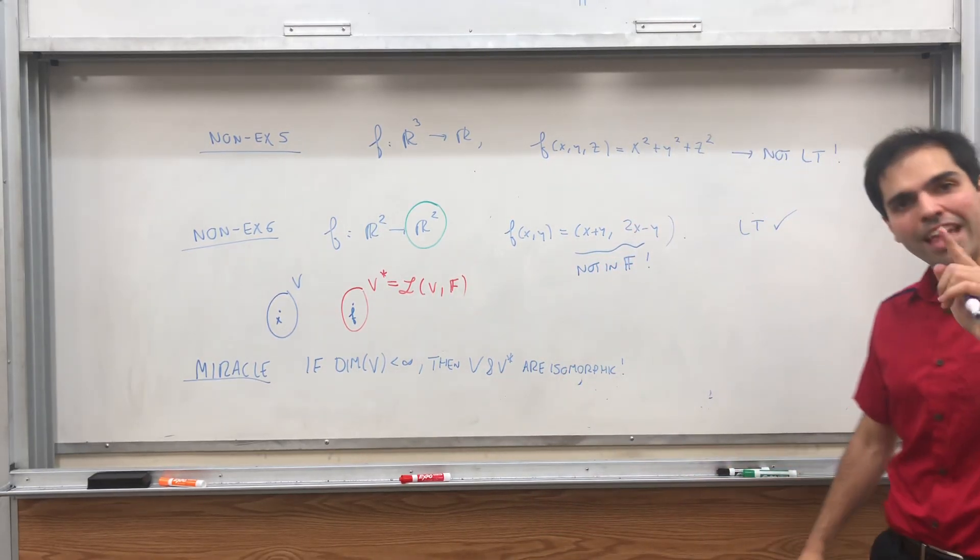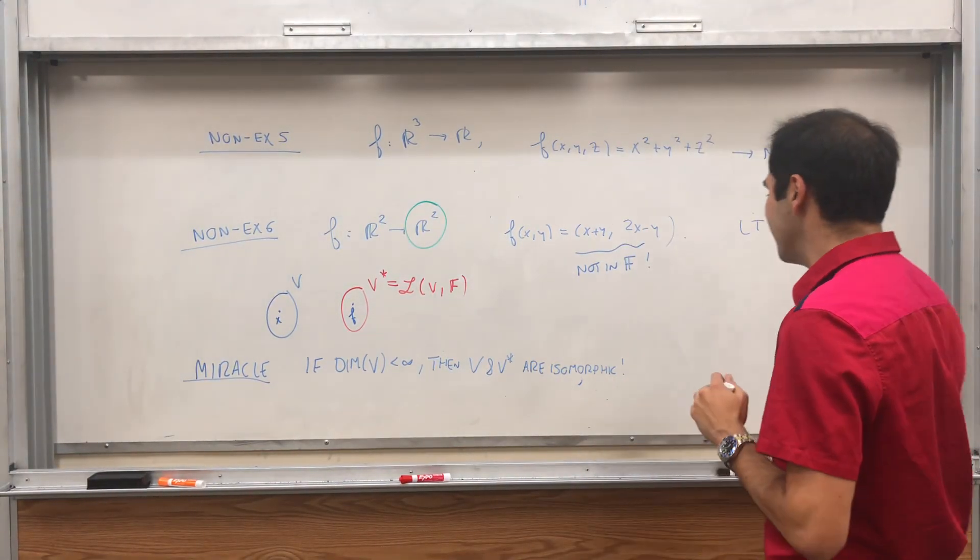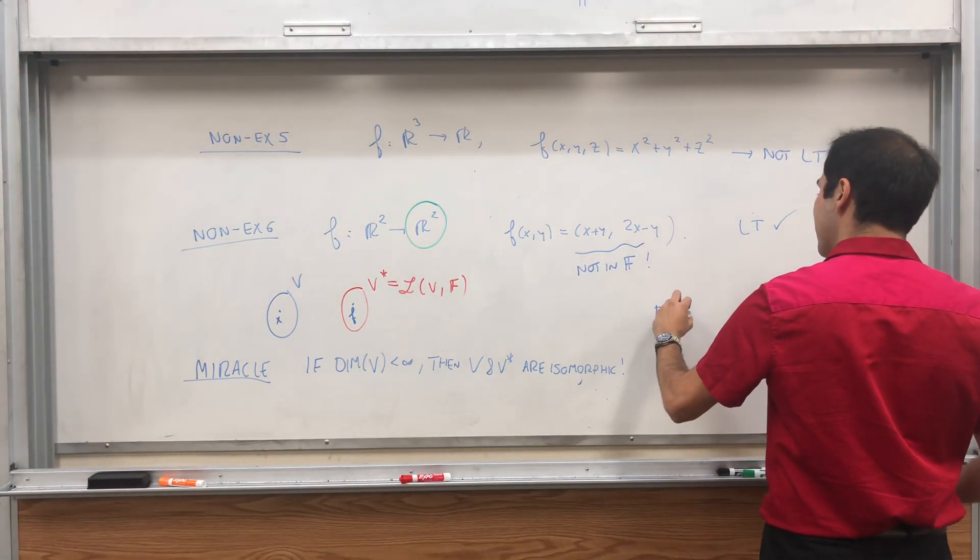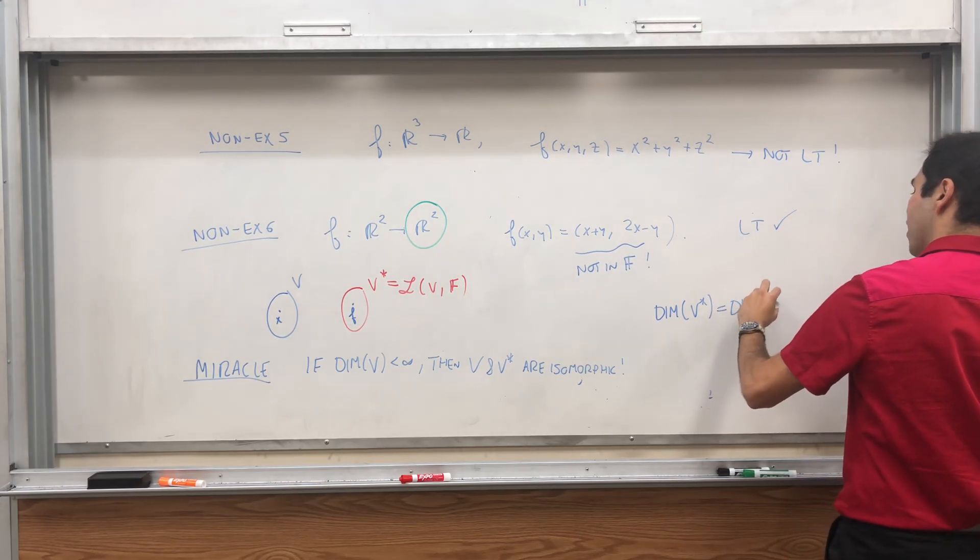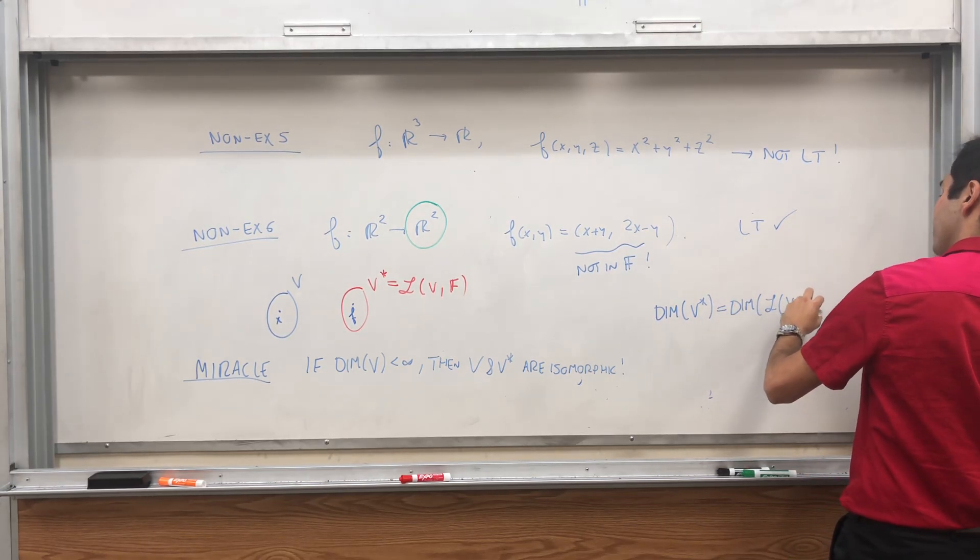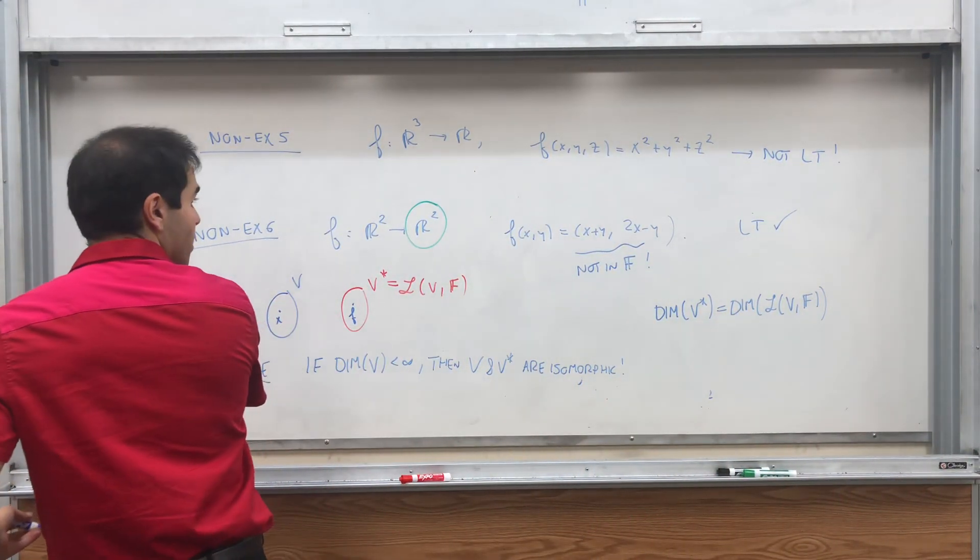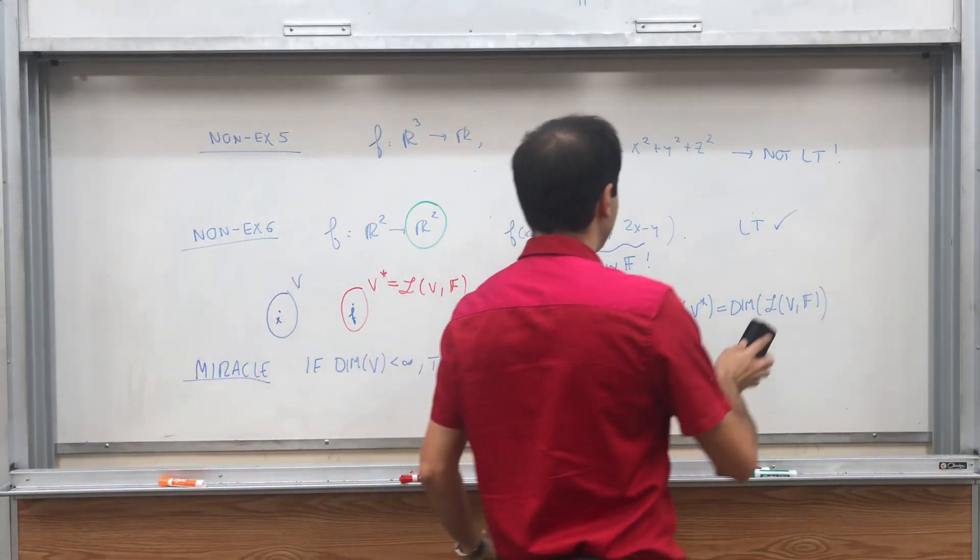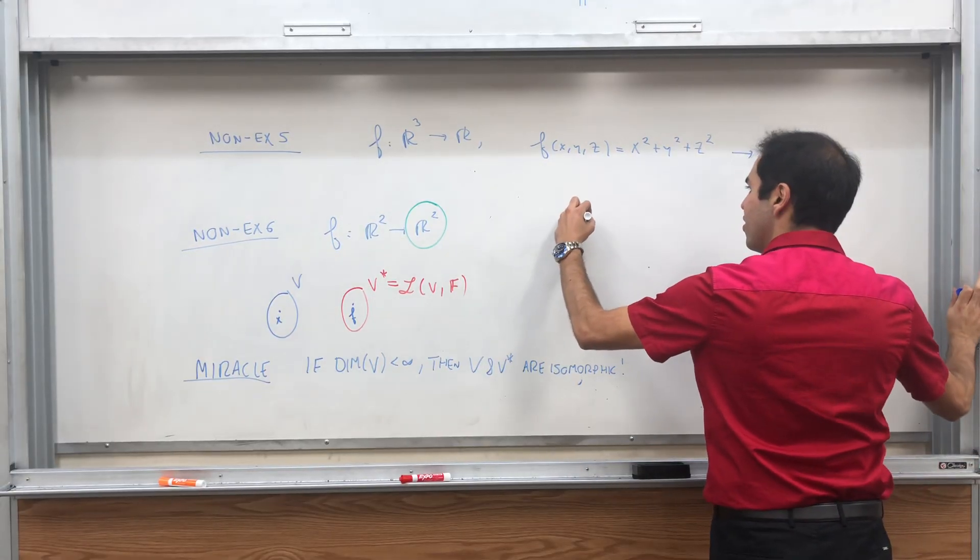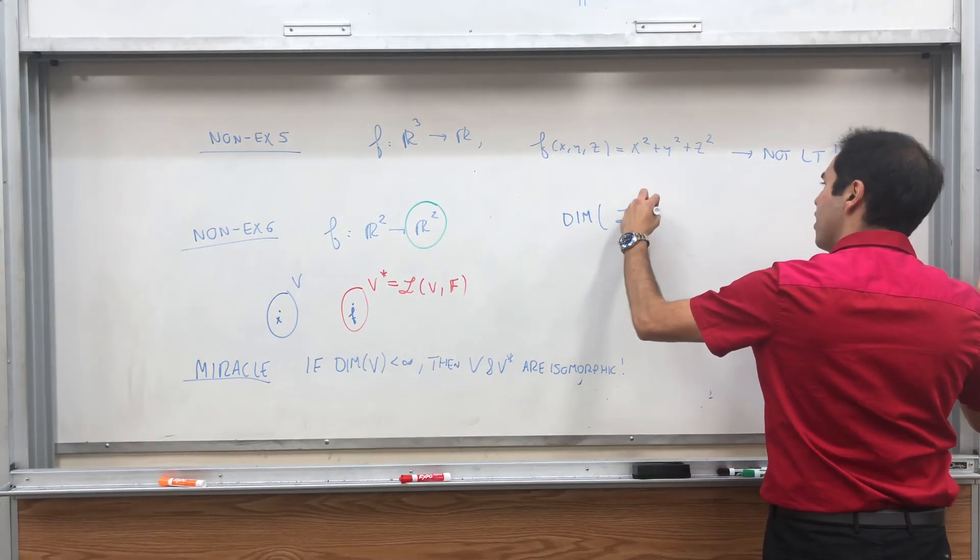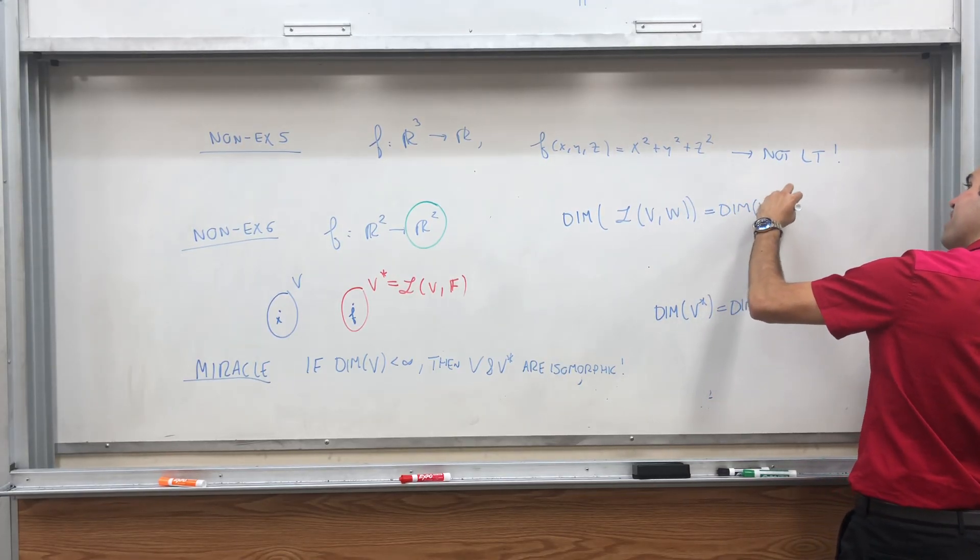And here's why. Let me give you a proof that's not satisfying. And in a later video, I'll give you a more satisfying proof. Well, look, let's calculate the dimension of V star. That's the dimension of the set of linear transformations from V to F. And I would like to remind you, linear transformations from V to F, you can think of it almost like M by N matrices.